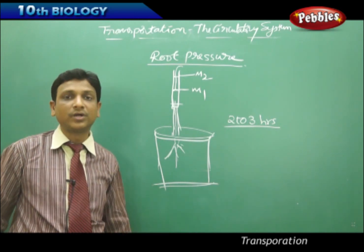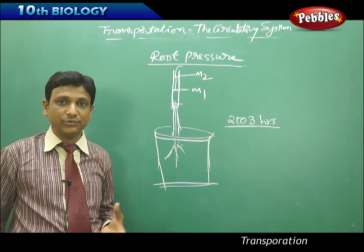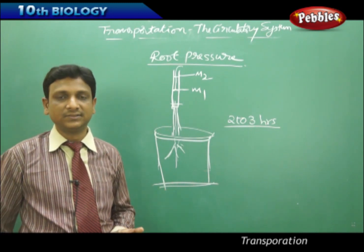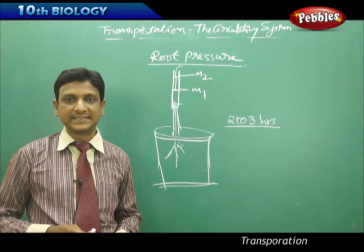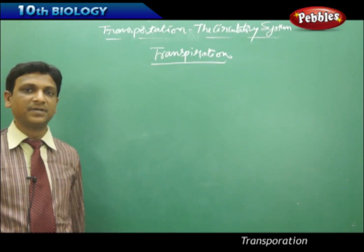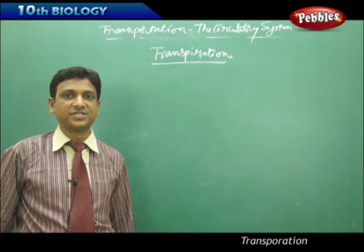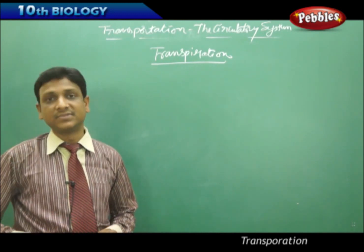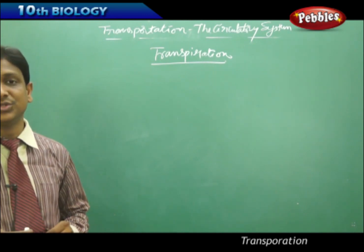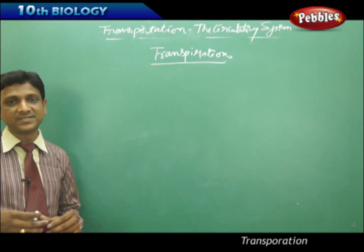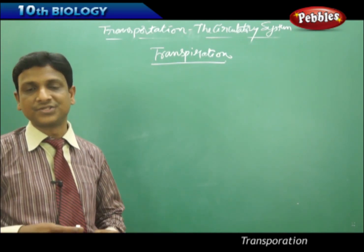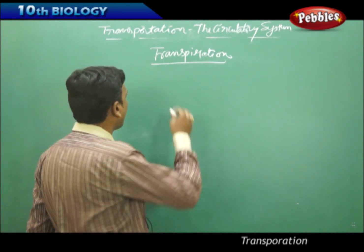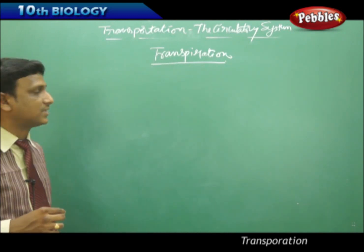Root pressure is one factor, but there are other factors contributing to water transport in plants. Root pressure helps the plant absorb water, but only up to a certain extent — it cannot push water to great heights, sometimes up to 180 meters in very tall trees. Sometimes root pressure is nil, depending on the availability and concentration of water in the soil. In such cases, another mechanism operates.